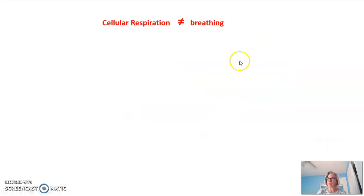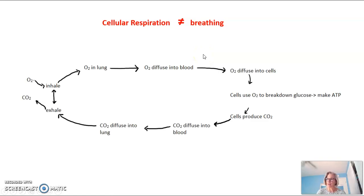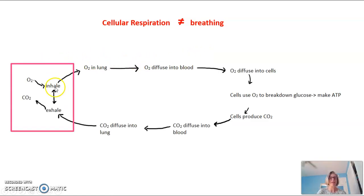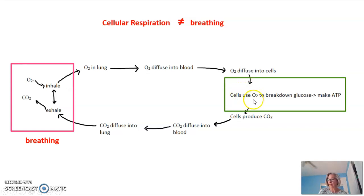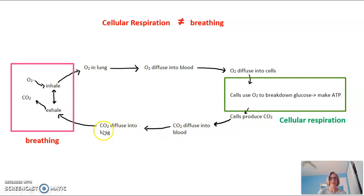It's really important to point out that cellular respiration is distinct from breathing, and many students have a hard time with this. The process of inhaling oxygen and exhaling CO2 is breathing. That oxygen then goes into the lung, diffuses into the blood, diffuses into the cells, and then cells use that oxygen to break down glucose to make ATP — that's cellular respiration. Carbon dioxide is a product of cellular respiration, which diffuses back into the blood, into the lung, and is exhaled again by breathing.